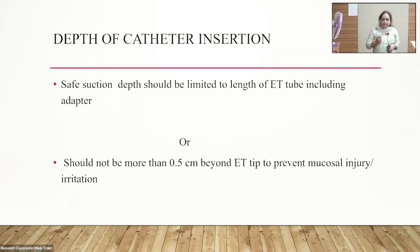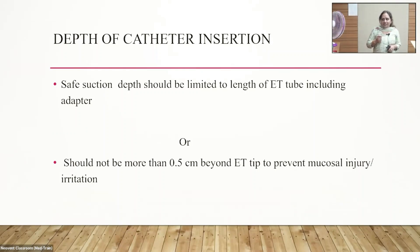Regarding depth of suction catheter insertion: safe suction depth should be limited to the length of the ET tube including the adapter, or at most 0.5 centimeters beyond the ET tube tip — not more than that. Inserting deeper will cause mucosal injury and irritation.